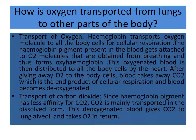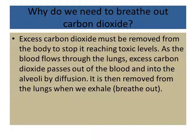After giving away oxygen to the body cells, blood takes away CO2 (carbon dioxide), which is the end product of cellular respiration, and blood becomes deoxygenated. Hemoglobin also transports CO2 from the different cells to the lungs, from where it is exhaled. High levels of CO2 in the body can be toxic, so CO2 needs to be removed. It is brought to the lungs by the blood and then removed when we exhale.